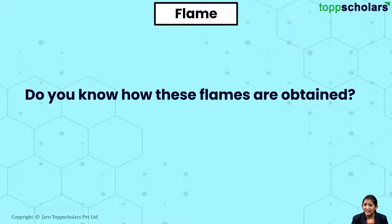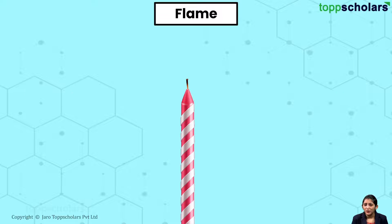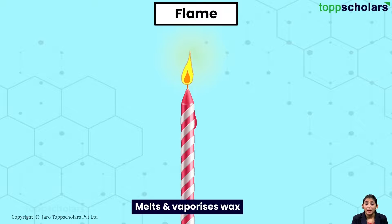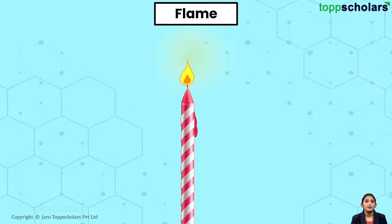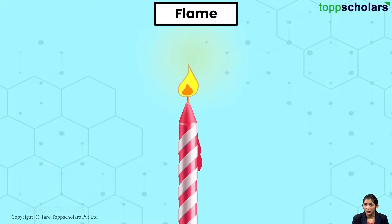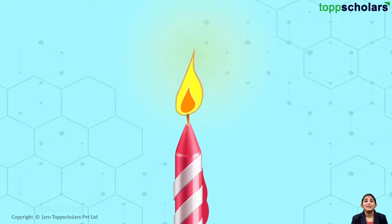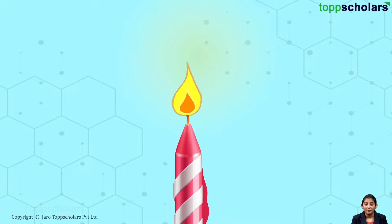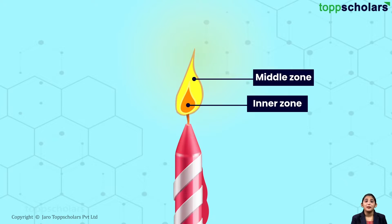Do you know how these flames are obtained? Now, when we burn the candle with the matchstick, the heat of the matchstick melts and vaporises wax, which rises through the wick and forms flame. Now, if you observe, you will see three distinct colours in the flame. This helps us to classify the parts of a flame as inner part, middle part and outer part.